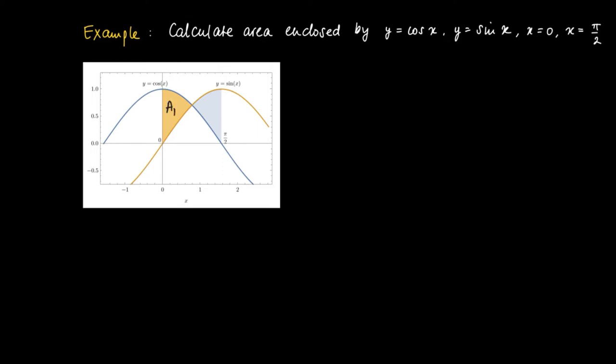So, we need to add up the areas A1 and A2 over here. And we see that the area A1 and the area A2 are calculated using the integral 0 to pi over 2 of the absolute value of the cosine x minus the sine of x.